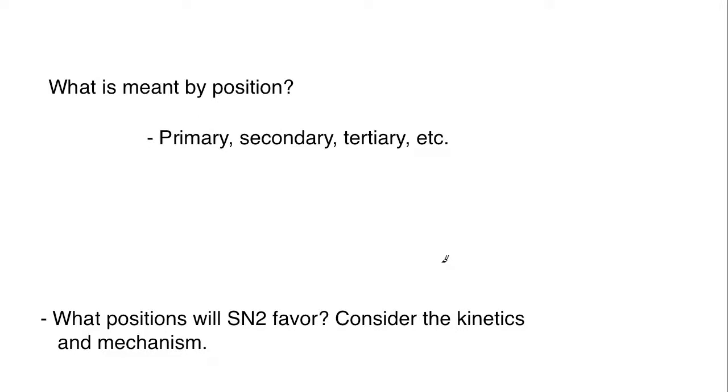So what is meant by position of leaving groups? When we talk about position, there's some examples here: primary, secondary, tertiary. There's also methyl type position. If I have an alkyl group, CH3-CH2-Cl, because this halogen is only attached to one other carbon, the carbon that it's attached to would make it primary. We could also have something like a secondary where we have CH3-CH(CH3) with the halogen.